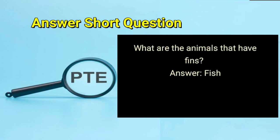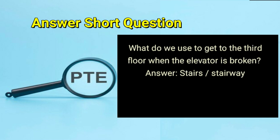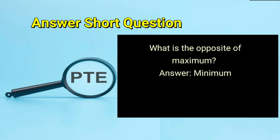What are the animals that have fins? Answer: fish. What do we use to get to the third floor when the elevator is broken? Answer: stairs or stairway. What is the opposite of maximum? Answer: minimum.